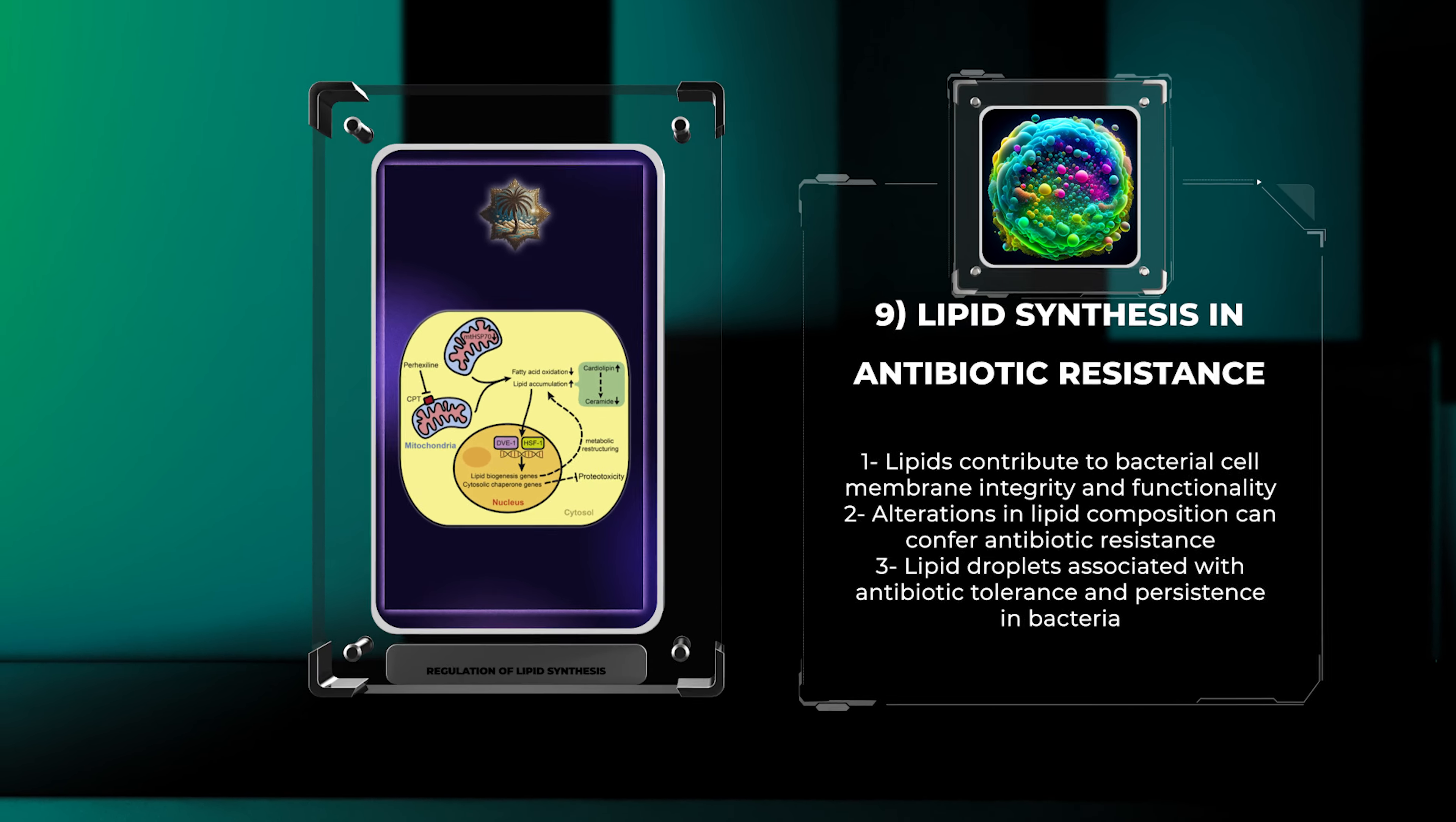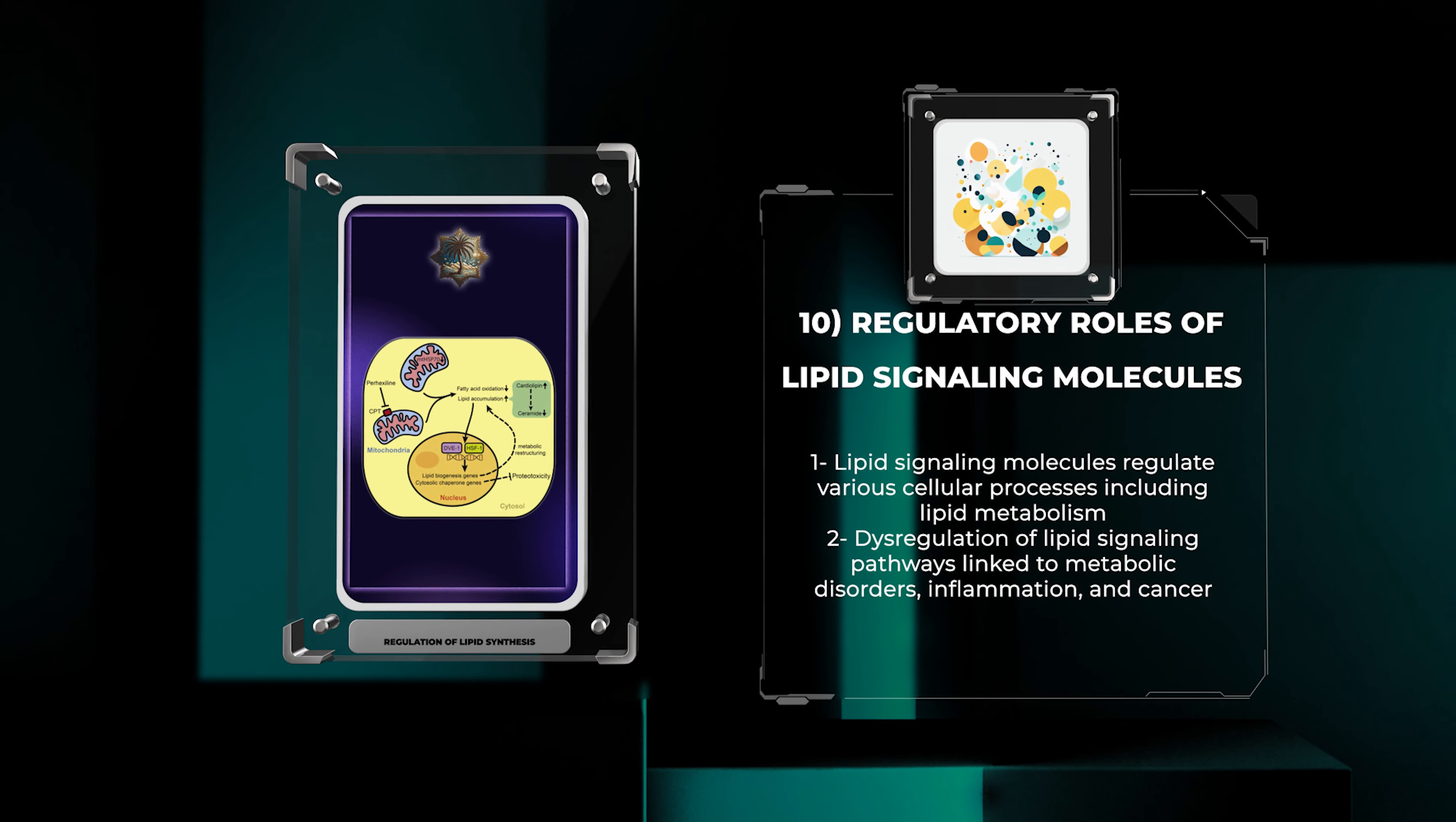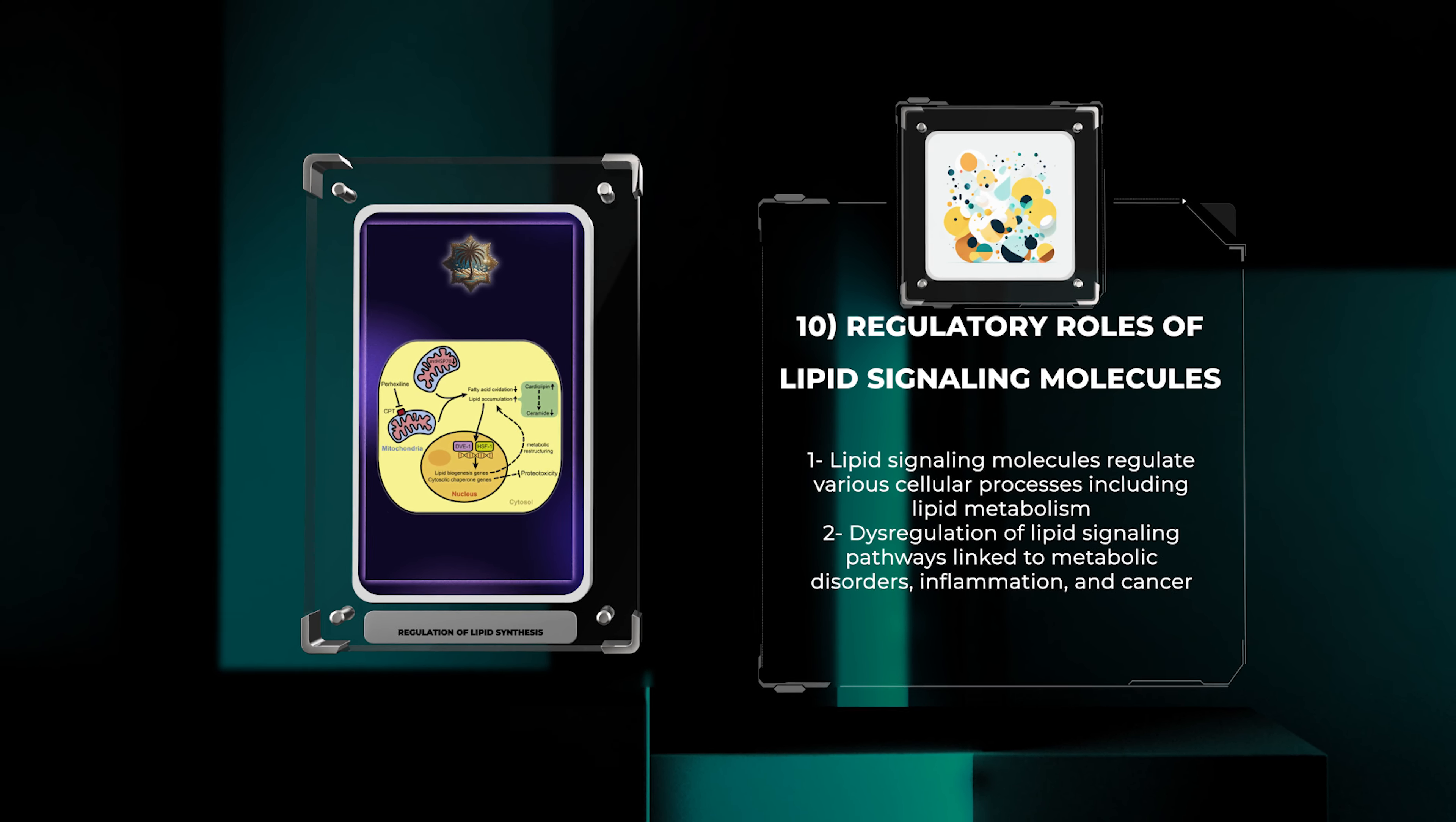Lipid signaling molecules, such as prostaglandins, sphingolipids, and phosphoinositides, exert regulatory effects on various cellular processes, including lipid metabolism. These signaling molecules modulate enzyme activities, gene expression, protein trafficking, and cell signaling pathways involved in lipid synthesis and degradation.